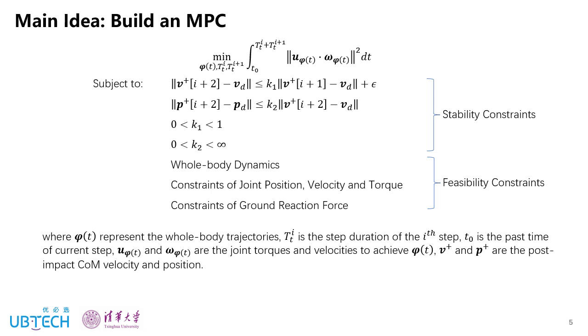In this work, we follow the MPC approach and build the MPC problem for future two steps. Where phi t represents the whole body trajectories, t sub t is the step duration, t zero is the past time of current step. U and omega represent joint torques and velocities, so the cost function is to minimize the joint power consumption. This problem is also subject to two types of constraints. The feasibility constraints include that the whole body dynamics should be satisfied, and constraints of joint position, velocity, torque, and ground reaction force. And we also propose a set of stability constraints, where V plus and P plus are post-impact COM velocity and positions. As will be shown later, this stability constraint ensures the uniform ultimate boundedness of V plus and P plus.